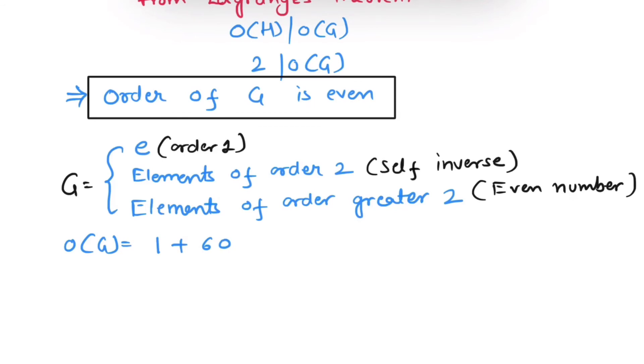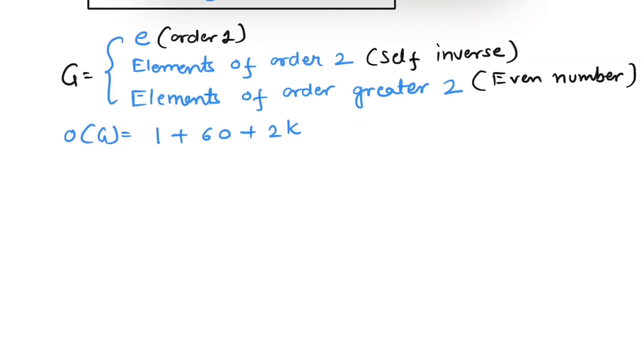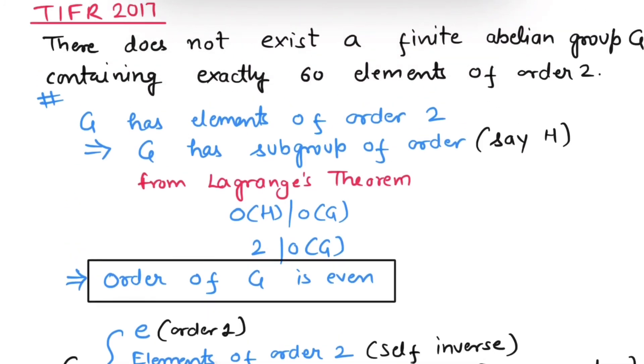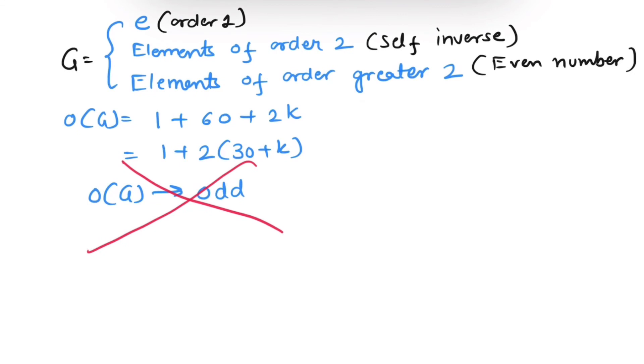For elements of order greater than 2, I am writing 2k. So order of G will be 1 plus 60 plus 2k, which equals 1 plus 2(30 plus k). From here we can see order of G is odd, which is a contradiction because order of the group is even. Hence there does not exist any group containing 60 elements of order 2.